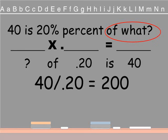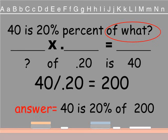Remember we're dividing now because we have part of the question and the answer, so we have to do the opposite. So we're dividing 40 divided by .20 equals 200. The answer is 40 is 20% of 200.